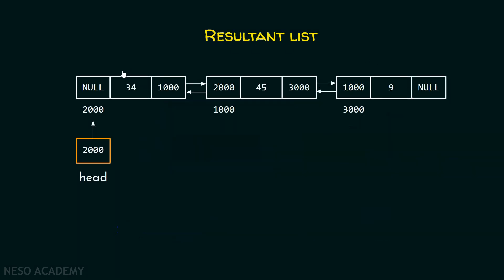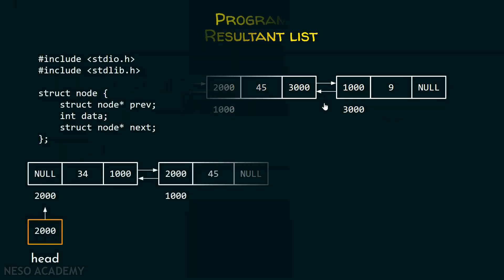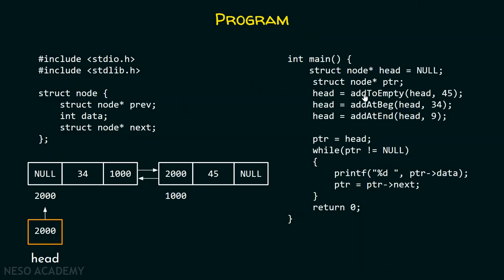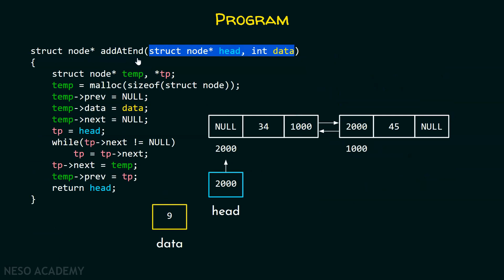This is how the resultant linked list looks like. We have a head pointer pointing to the first node, and the new node has been added at the end of the list. This is the complete program. In the main function, the first four lines of code are taken from the previous lecture — addToEmpty and addAtBeg functions. After this, we call the addAtEnd function, passing head as well as the value.